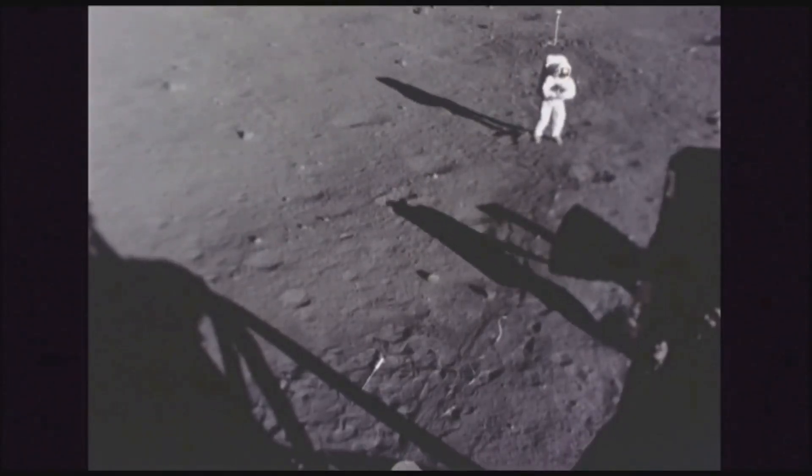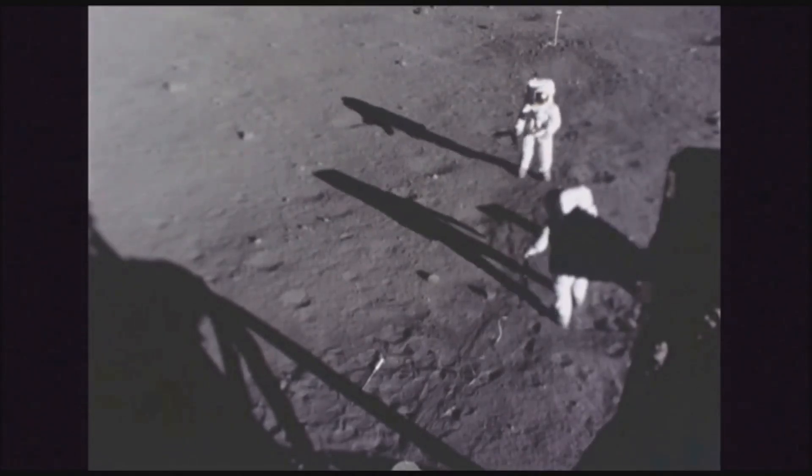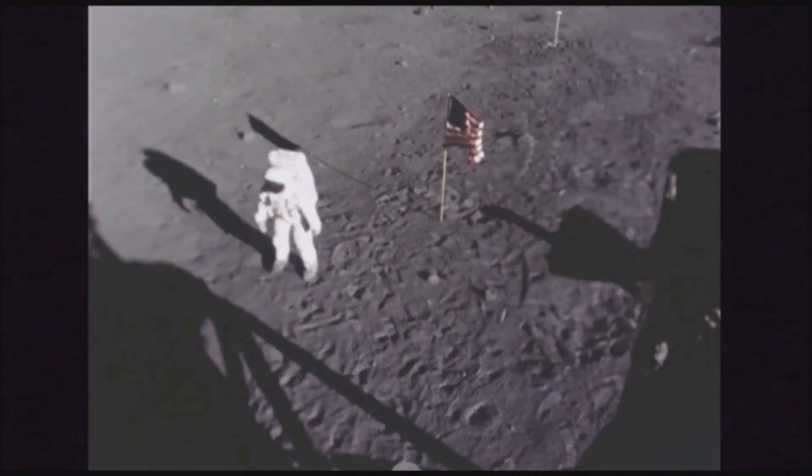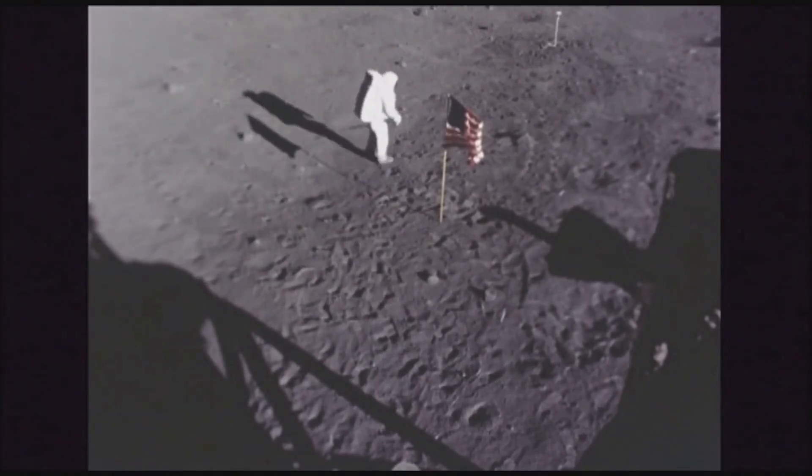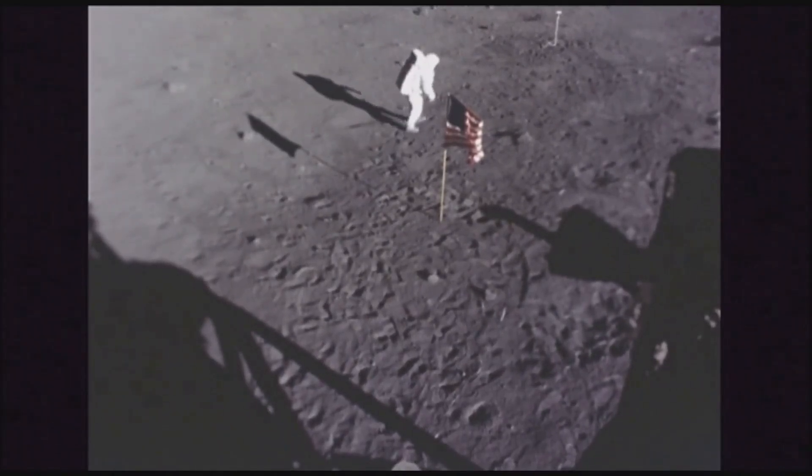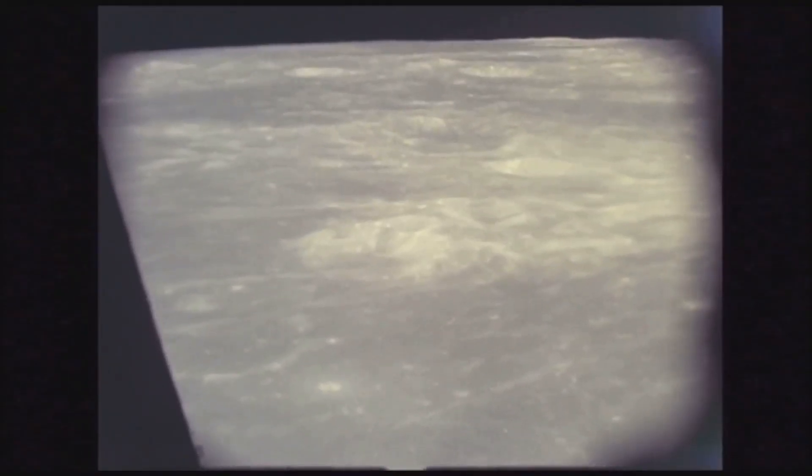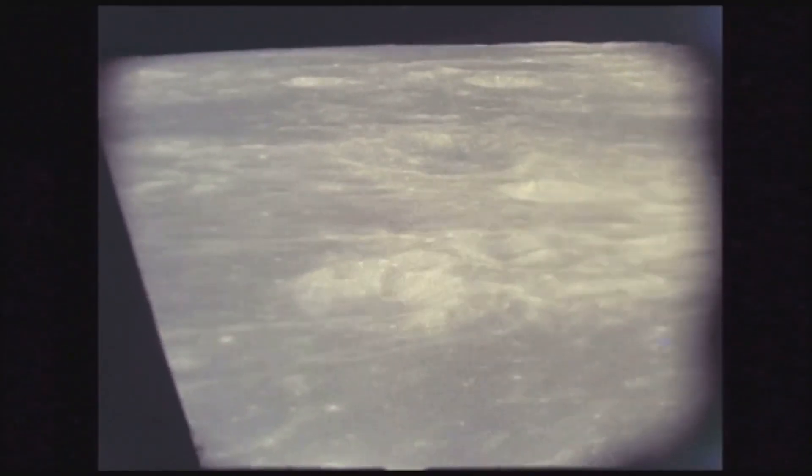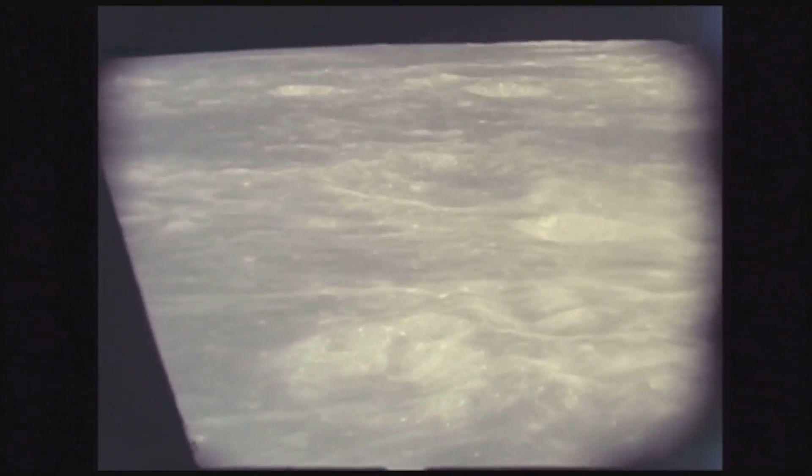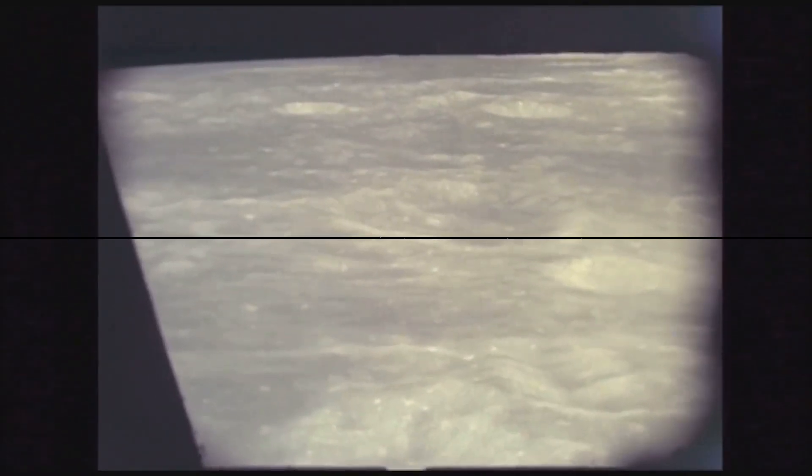Well, according to the scientific community, these footprints might potentially exist for an astonishing hundred million years. Picture that. A hundred million years of Lunar Chronicles, with the footprints of Neil Armstrong and Buzz Aldrin, indelibly marked on its surface, standing as a perpetual tribute to human exploration. Now that's quite a heritage. These footprints might be the most enduring evidence of human existence.